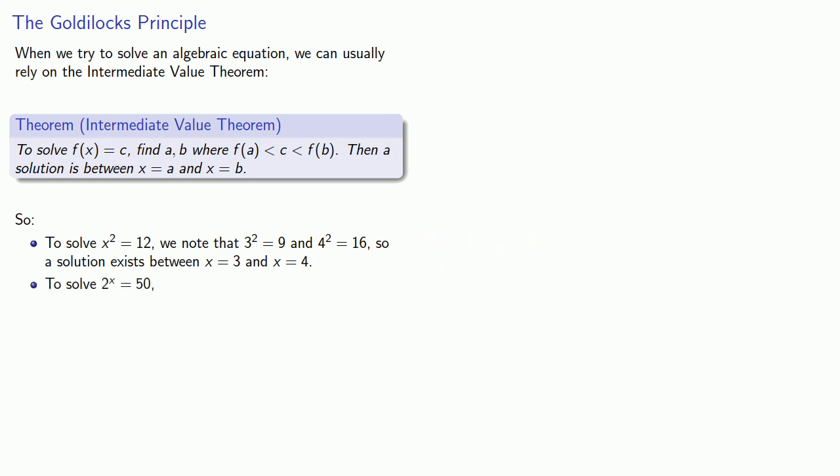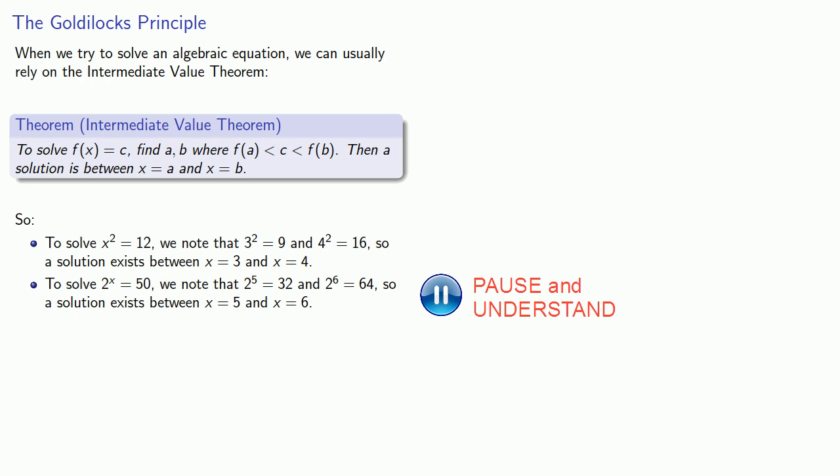Or if I want to solve 2 to power x equals 50, we know that 2 to power 5 is 32, 2 to power 6 is 64, and so a solution exists between x equals 5 and x equals 6. And if we want to gain more accuracy, lather, rinse, repeat.